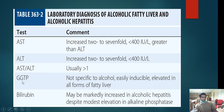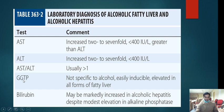GGT is increased but is not specific to alcohol — any form of fatty liver usually raises GGT. Bilirubin is raised in alcoholic hepatitis but not in fatty liver, with a marked increase in alcoholic hepatitis. Alkaline phosphatase is usually normal.